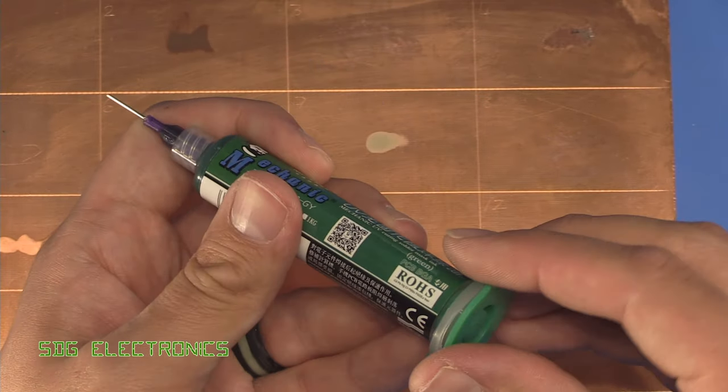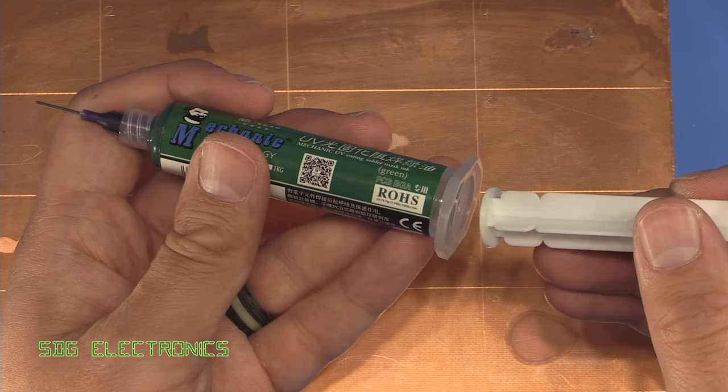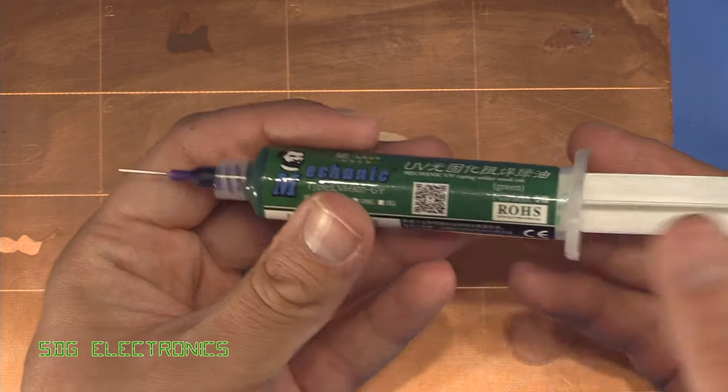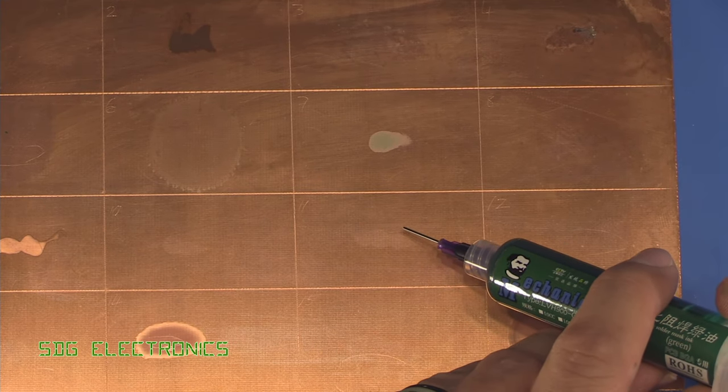So I've just screwed a dispensing needle onto the end and what we're going to try is a simple plunger because not everyone has one of the solder paste dispensers. First of all we'll just see what happens if we try and squirt some onto the board.